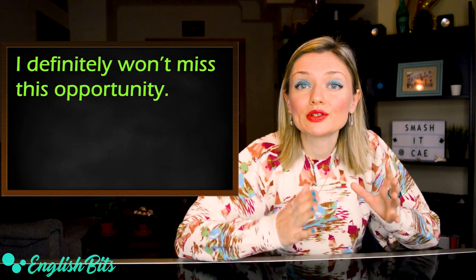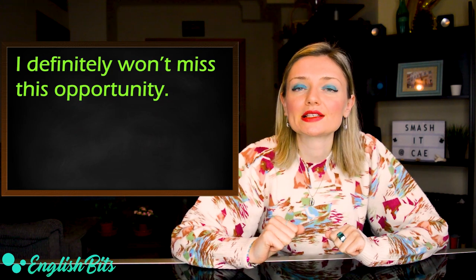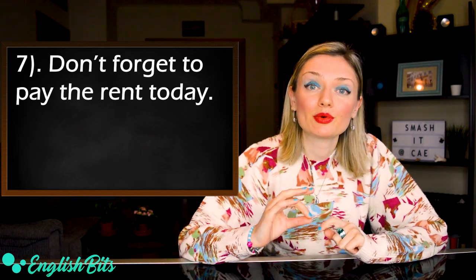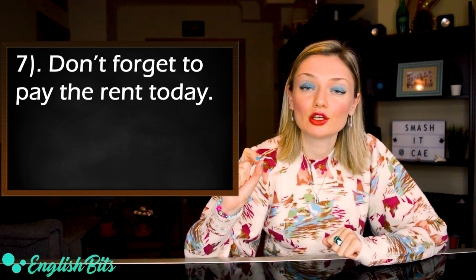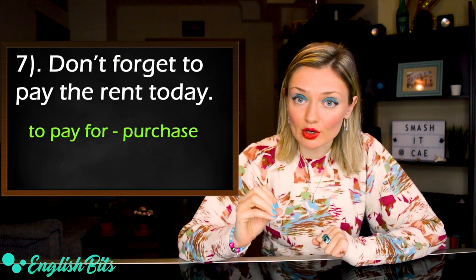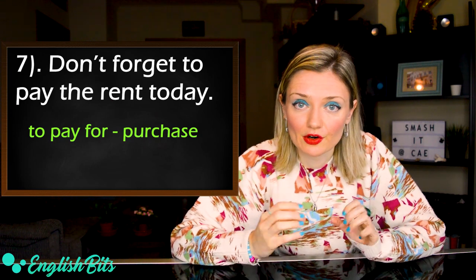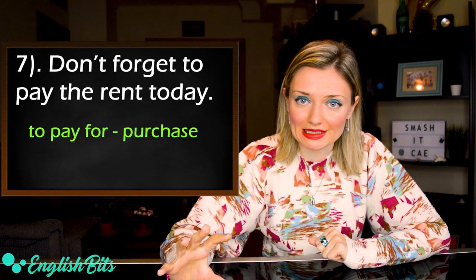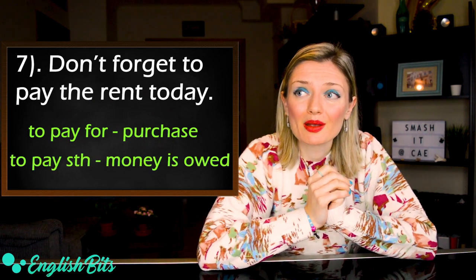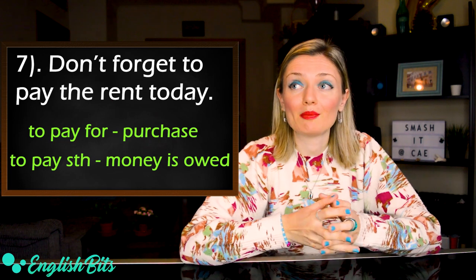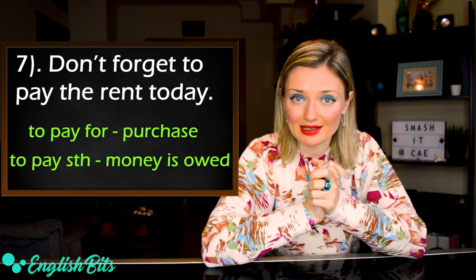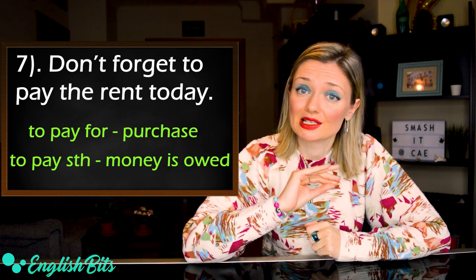Another example: 'I definitely won't miss this opportunity.' The correct sentence seven is: 'Don't forget to pay the rent today.' The mistake was the preposition 'for'. It's not correct to say 'to pay for the rent' — it's just 'to pay the rent'. We use 'pay for' when we talk about a purchase, for example: 'How much did you pay for the plane tickets?' But we say 'pay something' when talking about money owed, like bills or taxes: 'I pay my taxes religiously.'